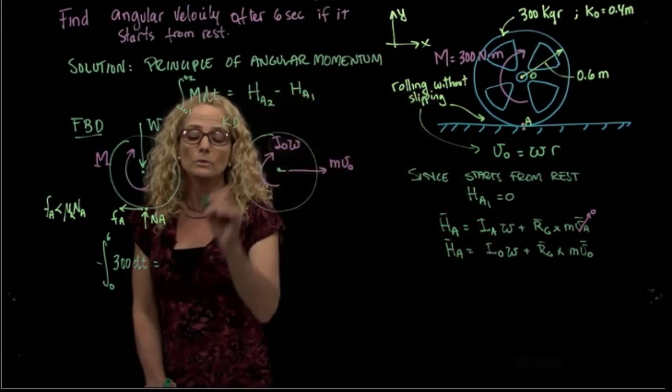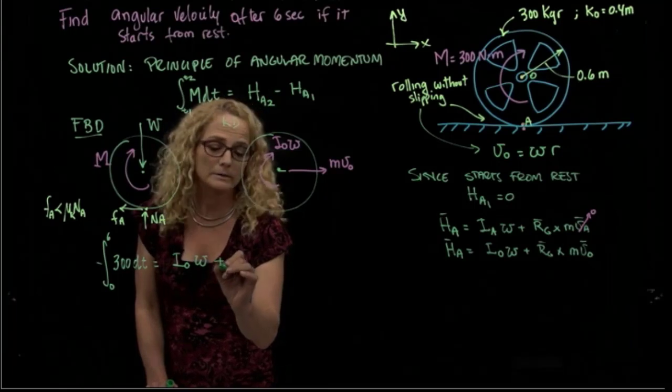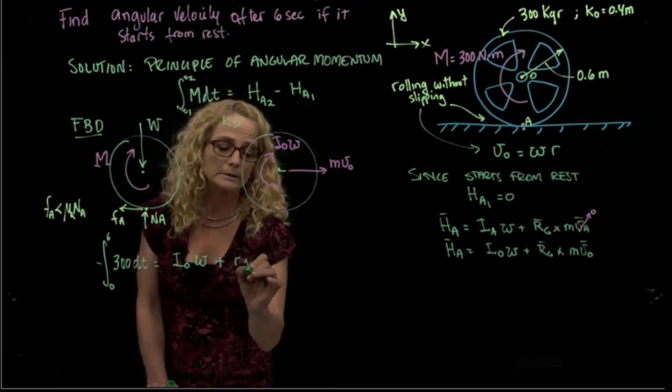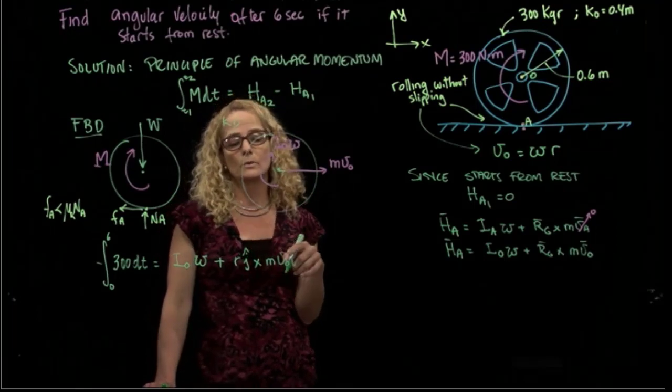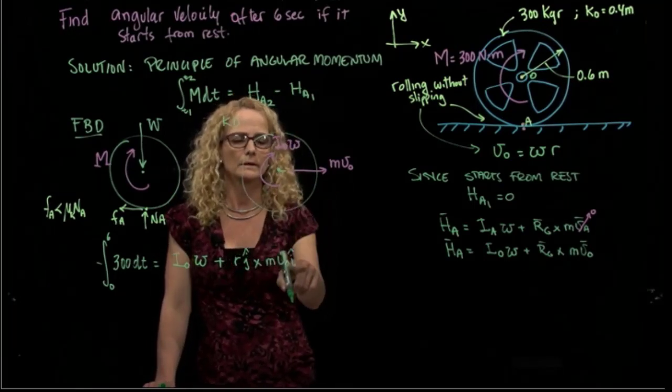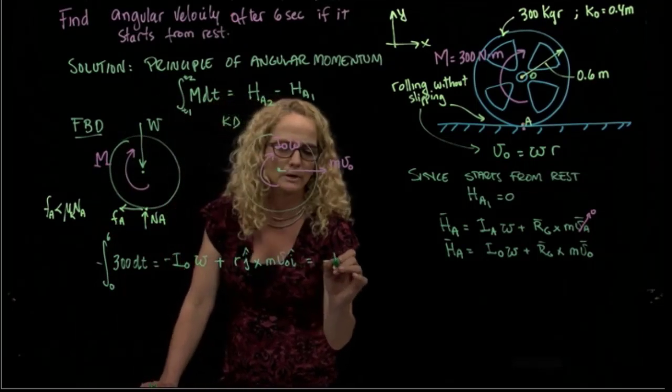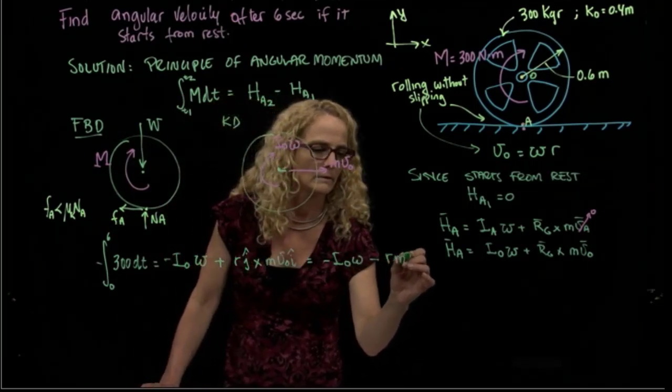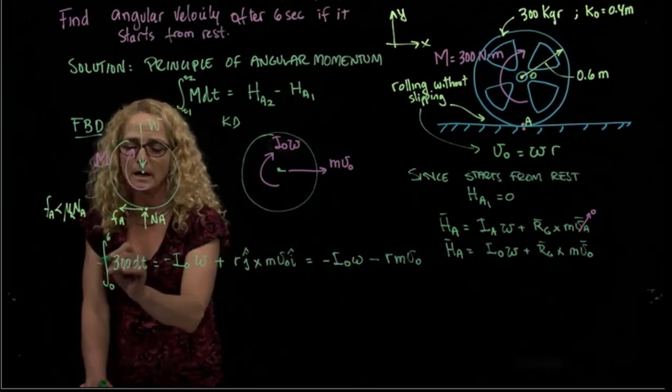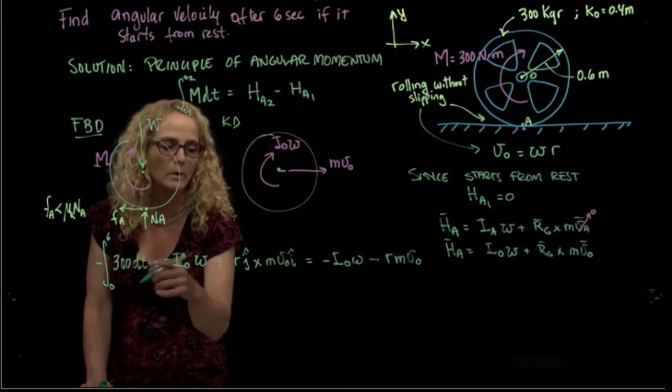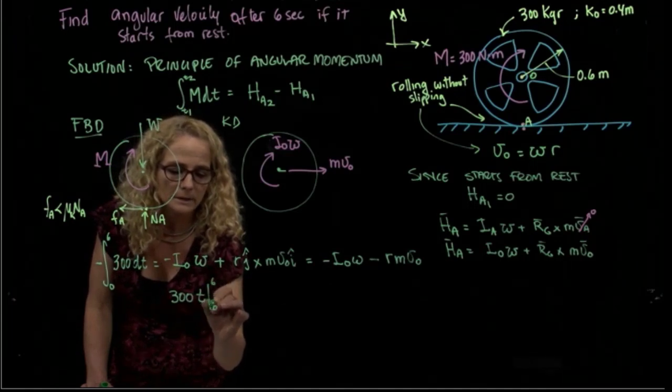That will be then equal to mass moment of inertia times angular velocity plus R, which is R in j, cross m*v in i. Just to see that this gives me a negative, and this is also negative, so everything is negative in this equation. So the final equation, if I integrate, I will take all those negative signs out because everything is negative, so I can multiply by negative one on both sides of the equation. So I will have 300t evaluated at 0 and 6.